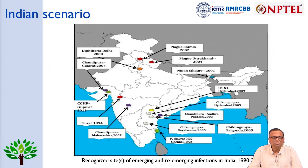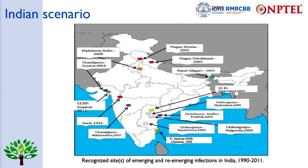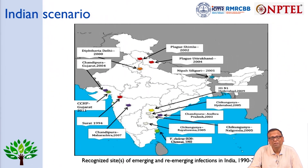Returning to the Indian scenario, this map shows the recognized sites of emergence and re-emergence of infections in India since 1990: diphtheria in Delhi in 2000, Chandipura in Gujarat in 2004 and Andhra Pradesh in 2003, H1N1 in Hyderabad in 2009, Crimean-Congo hemorrhagic fever in Surat in 2011, Chandipura again in Maharashtra in 2007, Nipah in Siliguri in 2001, and plague in Uttarakhand in 2004 and Shimla in 2002.